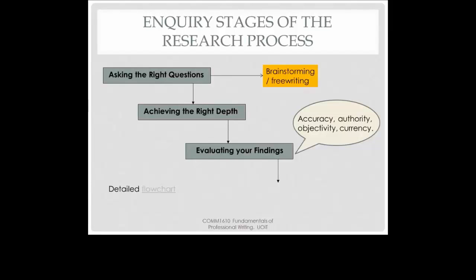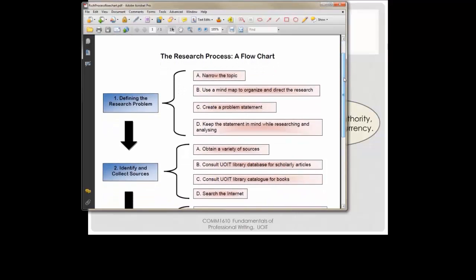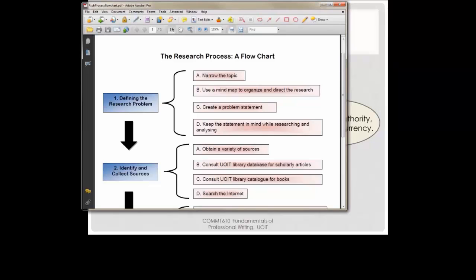I'm going to show you this detailed flow chart again, which we saw in one of the other videos. We're focusing here on that first stage: defining the research problem. The general sequence is the same as what we've just been talking about. You define the research problem — in other words, ask the right questions. To get to the right question, you must narrow the topic. A topic that is too big, for example the history of World War II, will lead to a superficial essay because you will not be able to achieve the right kind of depth. You can use a mind map to help you organize your thoughts and direct your research. Then you can create a problem statement, which is basically the same as an argument, a thesis statement, or a research question. Write your thesis statement or argument down and refer back to it regularly while you are researching and writing, just to make sure you're staying on track and haven't lost sight of your original idea.